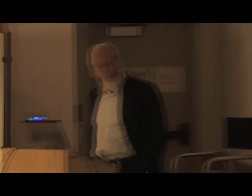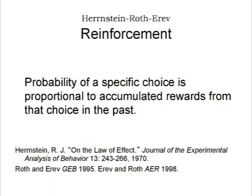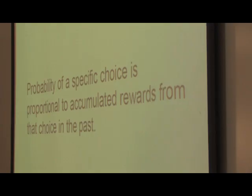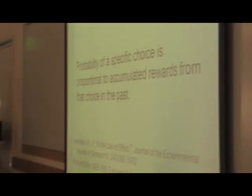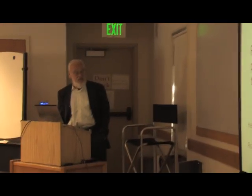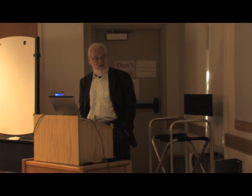I'm going to talk about two kinds of trial and error learning. The first is reinforcement learning of the Erev-Roth kind. There's a repeated choice situation, and on any trial, the probability of a specific choice is proportional to the accumulated rewards from that choice in the past.